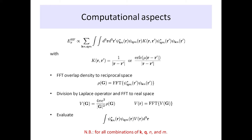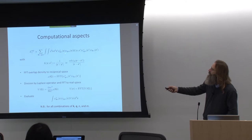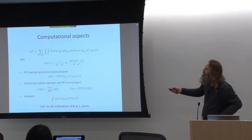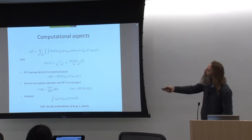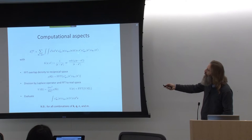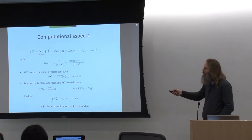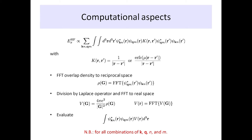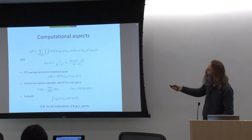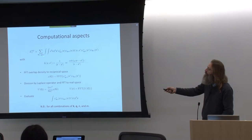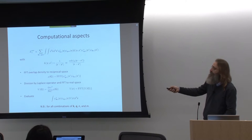Coming to the computational aspect: this is the thing we would like to evaluate. We have two sums over the orbitals to compute our Fock exchange energy, and a 1/(R minus R prime) kernel — or this range-separated short-range kernel. How do we typically evaluate such a thing? You would have two orbitals at different k-points and two different bands. This sum is over all k-points twice and over all occupied bands twice, so this is quite a bit more expensive than DFT.